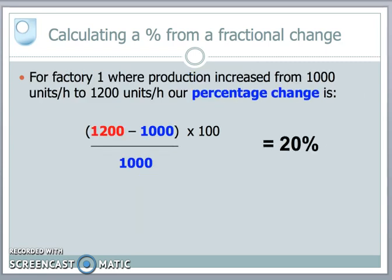For factory one, production increased from 1,000 to 1,200 units per hour. The percentage change is: (1,200 − 1,000) ÷ 1,000 × 100. The difference is 200 divided by 1,000, multiplied by 100, giving a percentage change of +20%. That's a positive increase. For factory two, production decreased from 2,000 to 1,800 units per hour. The percentage change is: (1,800 − 2,000) ÷ 2,000 × 100. The difference is −200 divided by 2,000 multiplied by 100, giving a percentage change of −10%. We've gone down in production.